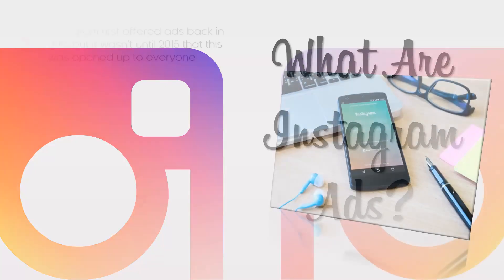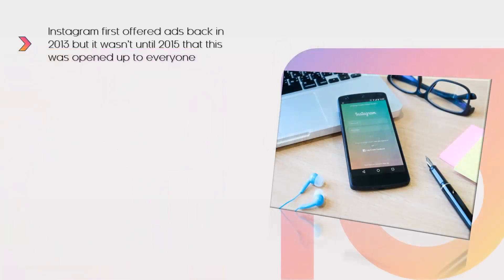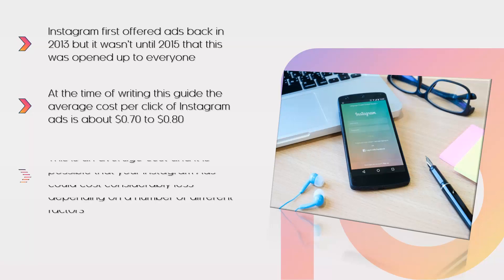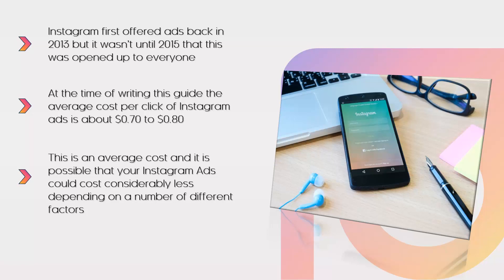Instagram first offered ads back in 2013, but it wasn't until 2015 that this was opened up to everyone. Once businesses started using Instagram ads, they found them to be very effective. At the time of writing this guide, the average cost per click of Instagram ads is about 70 cents to 80 cents, from an analysis of over 300 million dollars in ad spend on the platform. This is an average cost, and it is possible that your Instagram ads could cost considerably less depending on a number of different factors.